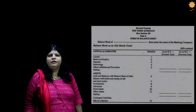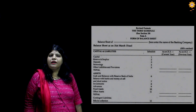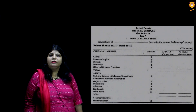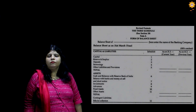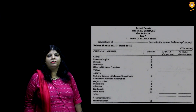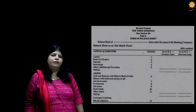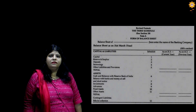On the liabilities side, there are five schedules, that is from Schedule 1 to Schedule 5. The first item is share capital, the second is reserves and surplus, the third is deposits, the fourth is borrowings, and the fifth is other liabilities and provisions. On the asset side, the first item is cash and balance with RBI, the second is balance with banks and money at call and short notice, followed by investments, advances, fixed assets, and other assets.